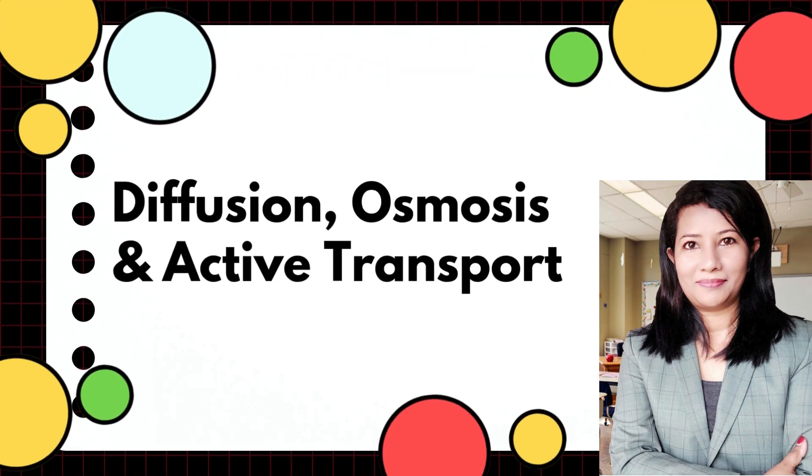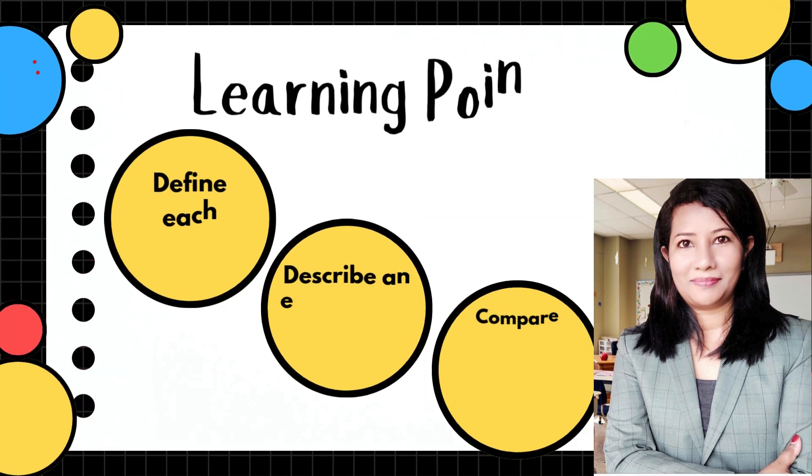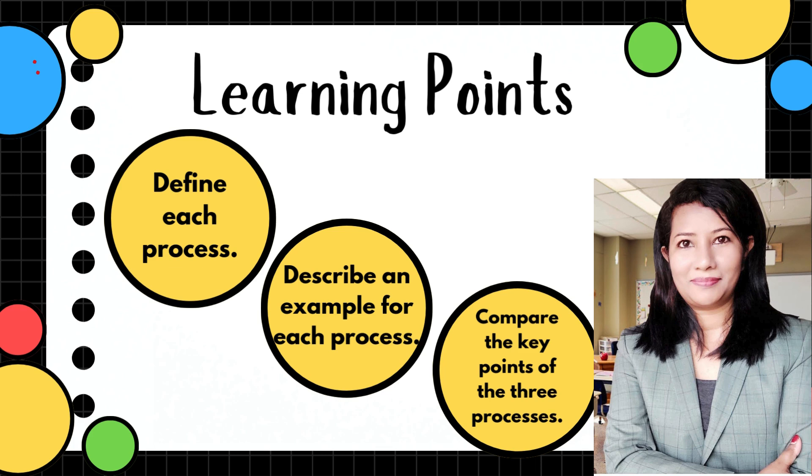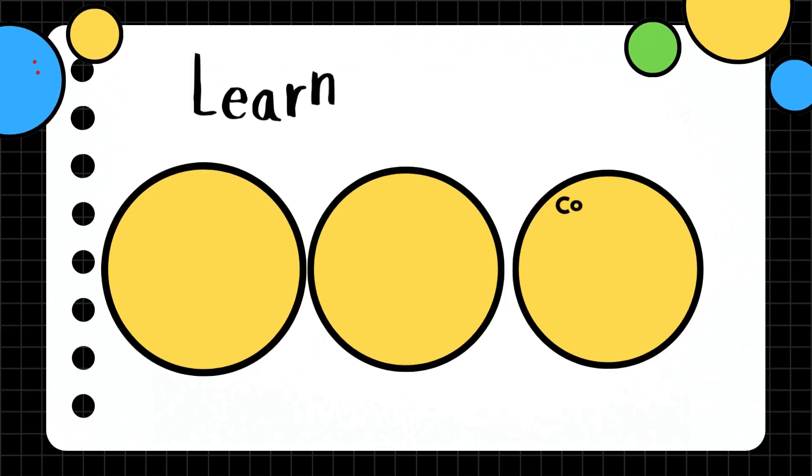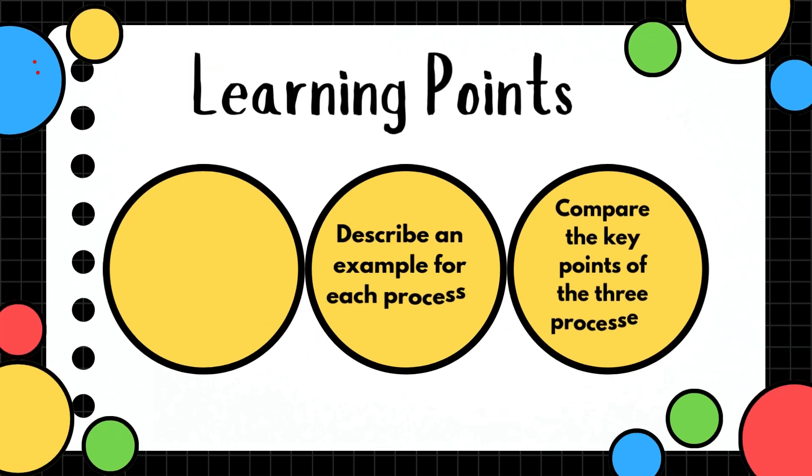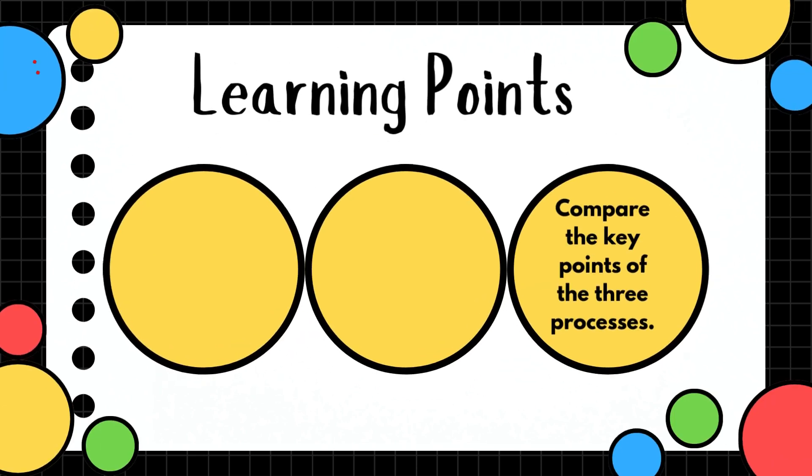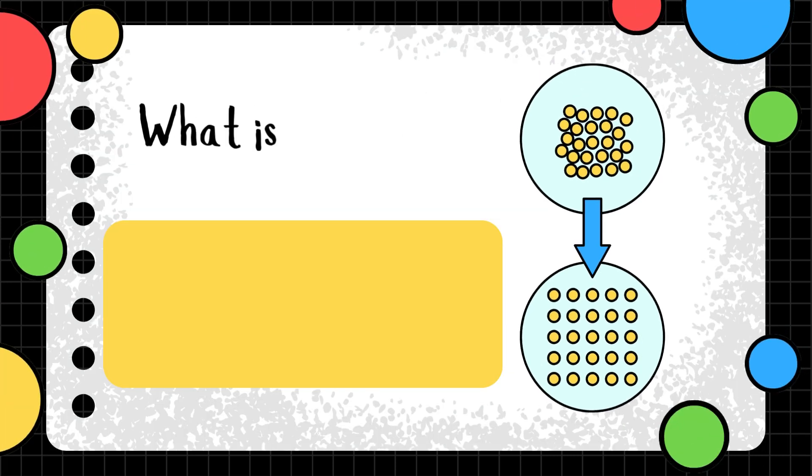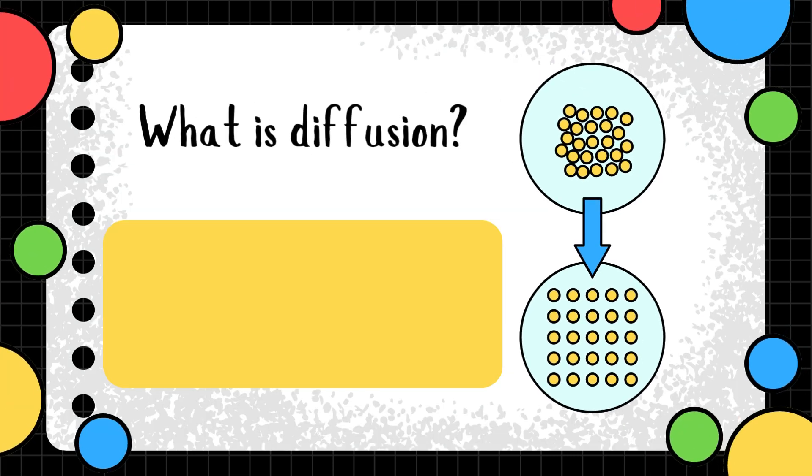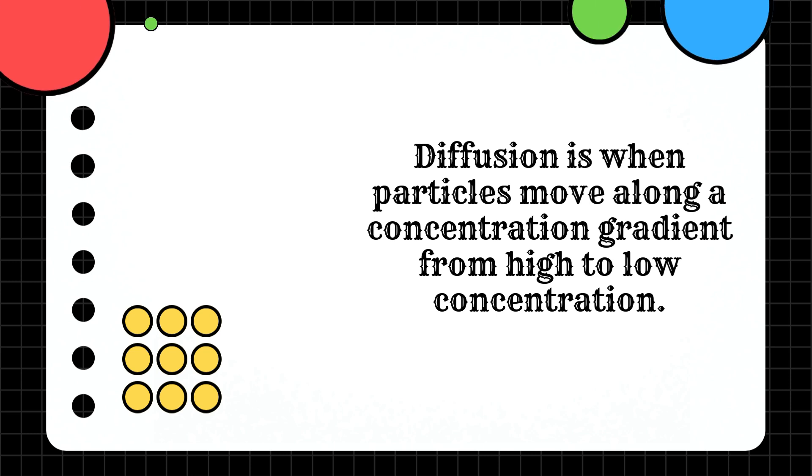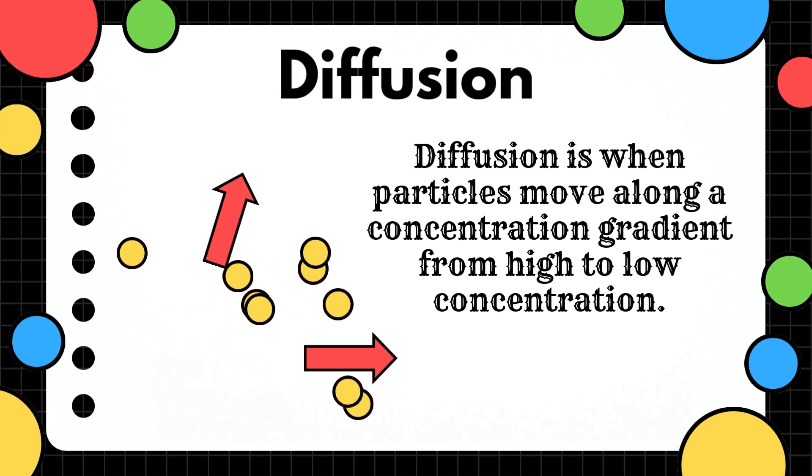Diffusion, osmosis and active transport. Here's the learning points: you need to describe an example for each process and compare the key points of the three processes. So what is diffusion? Diffusion is when particles move along a concentration gradient from high to low concentration.